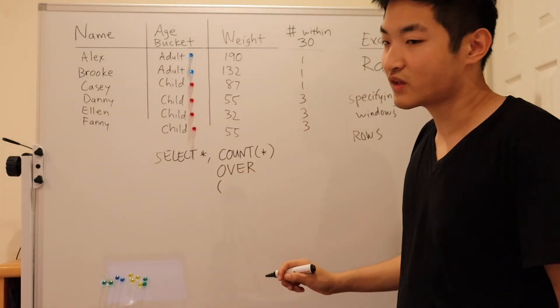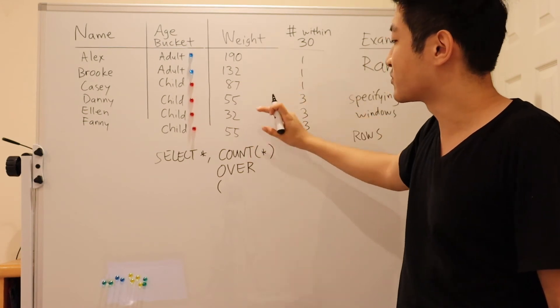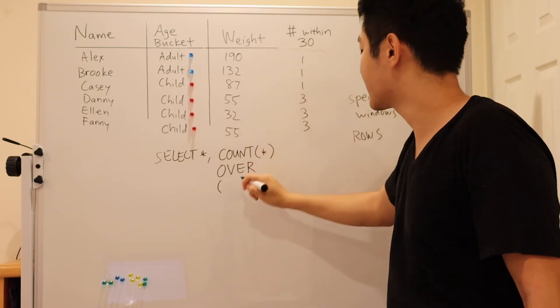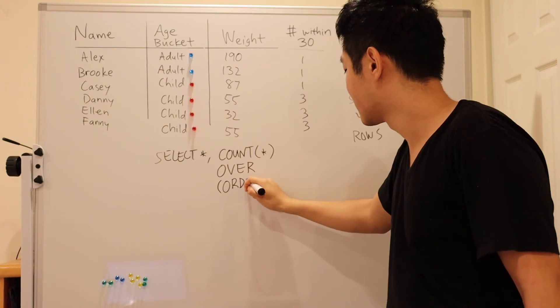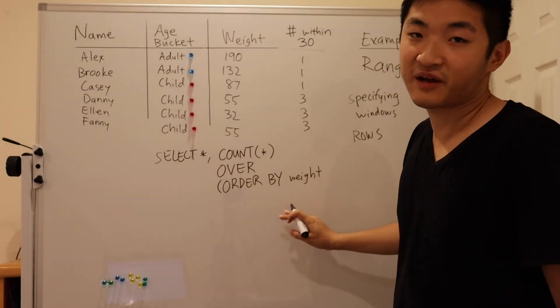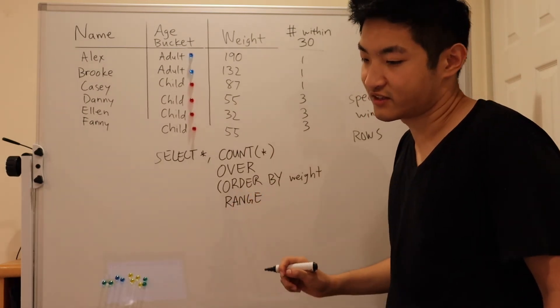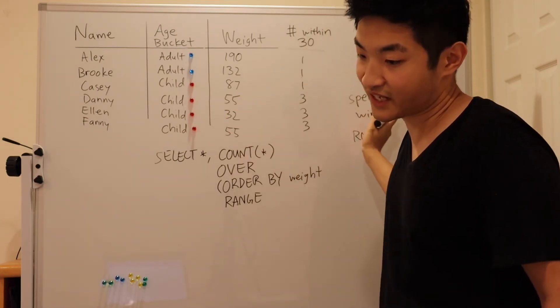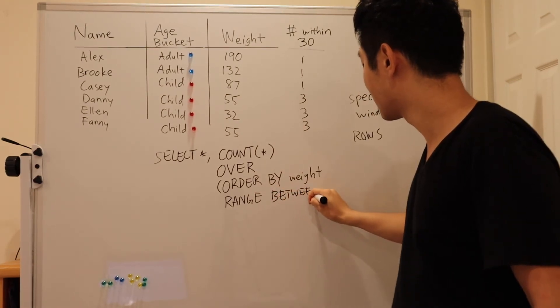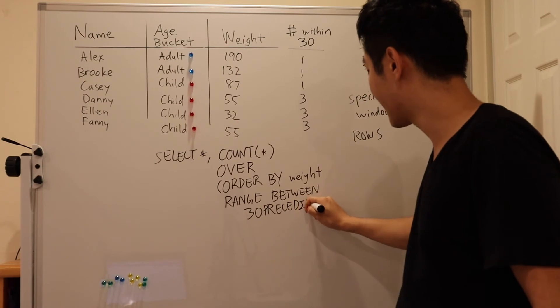Now this window is going to use range. But before we can use range, we have to sort the range that we're going to compute. In this case, our range is based on weight. So we're going to order by weight. And once we have this order by, we can now use a range. So our range is 30 pounds before or 30 pounds after. So we can say range between 30 preceding and 30 following.